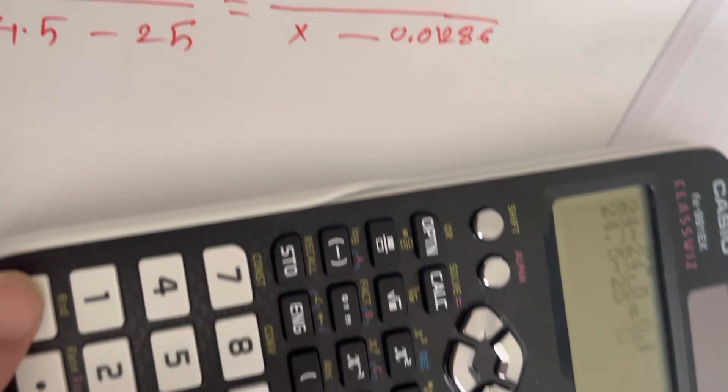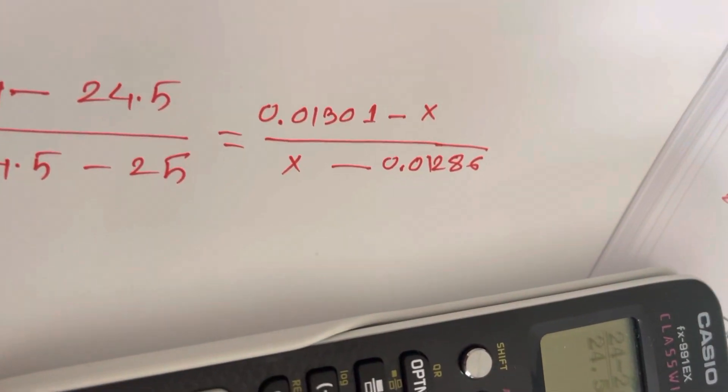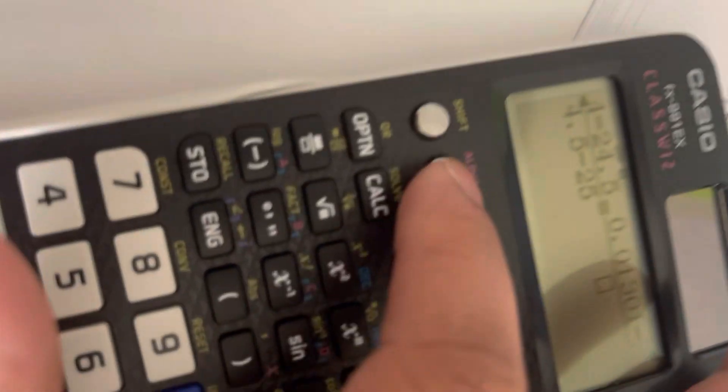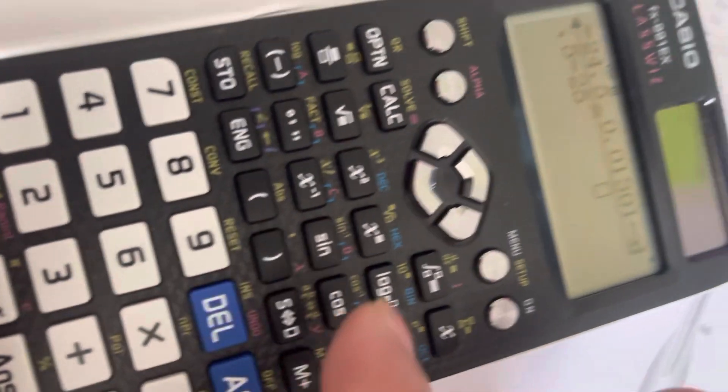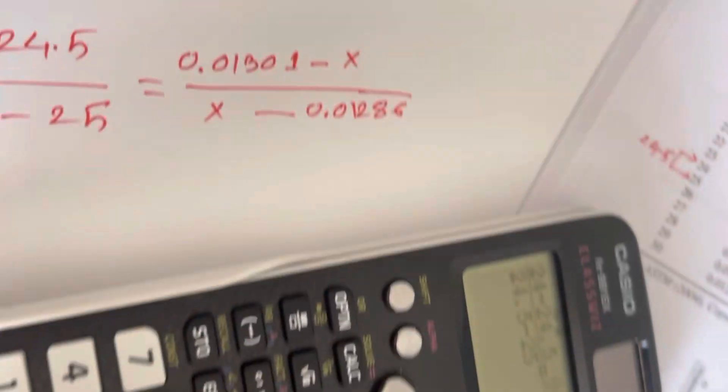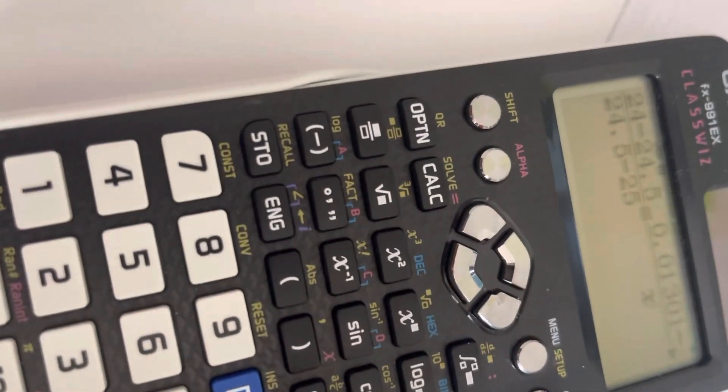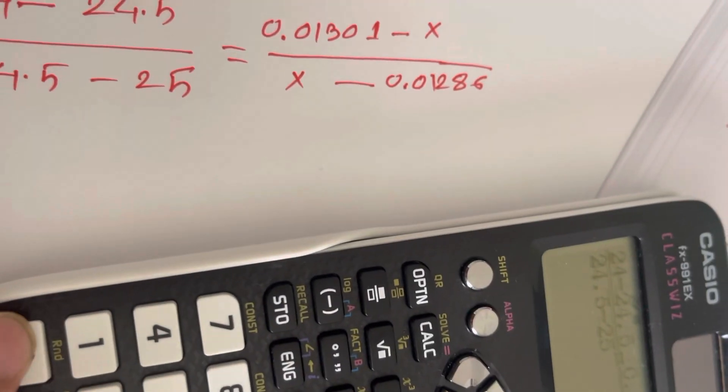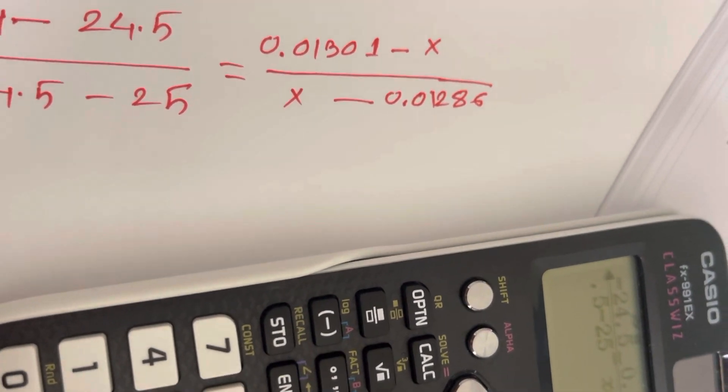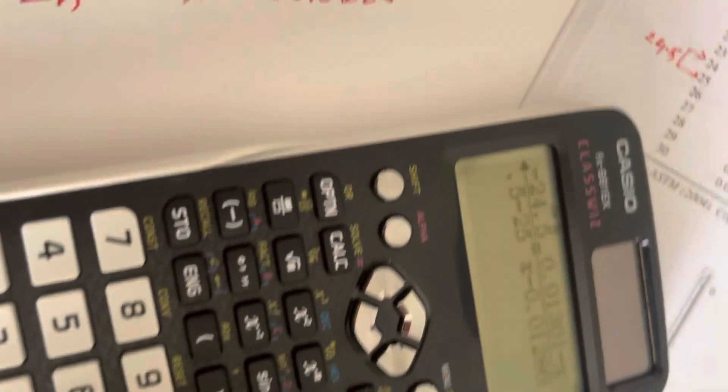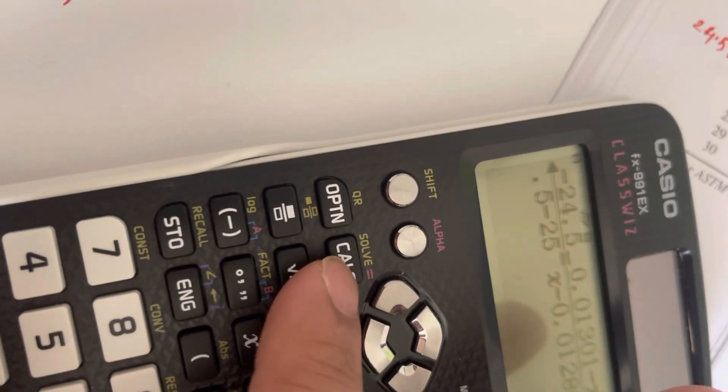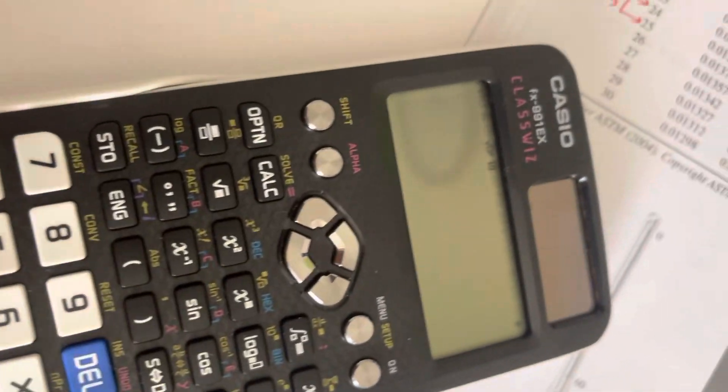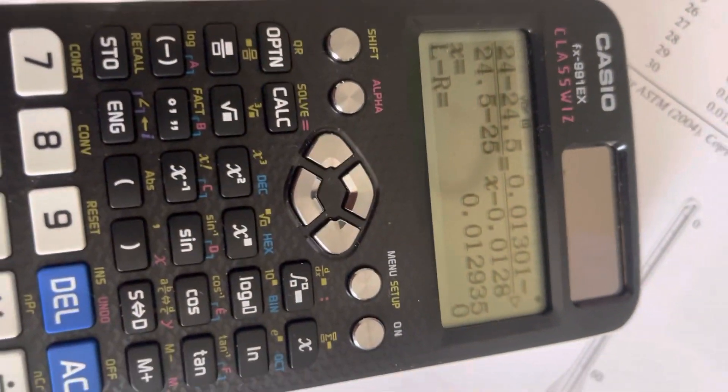And 0.01301 minus alpha. We just put this equation in this calculator. 0.01286, same. And then shift solve, and then equals. Need to open the result within a second.